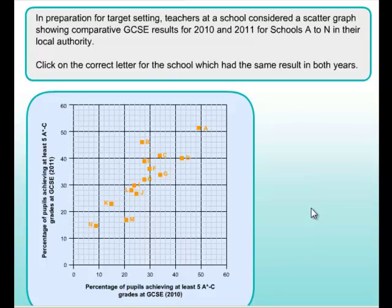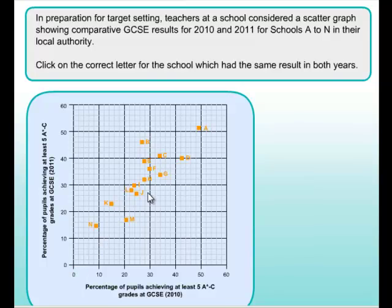The same result in both years means exactly that - they must have the same score in 2010 and 2011. The quick way to find that is to draw an imaginary line through the diagonal. Any point that lies on the line going through 0,0 then 10,10 then 20,20 then 30,30 and so on - this diagonal line is the letter we're looking for.